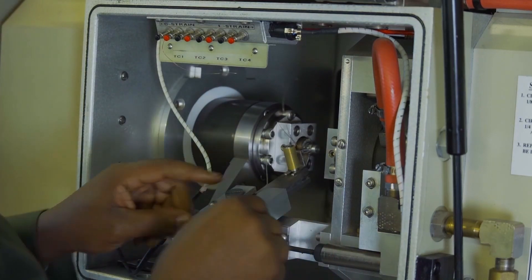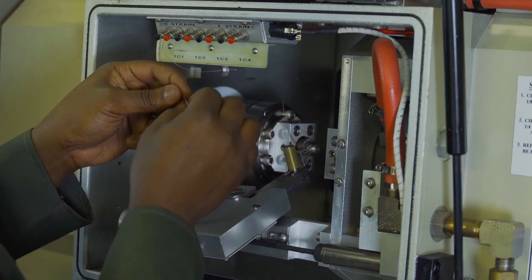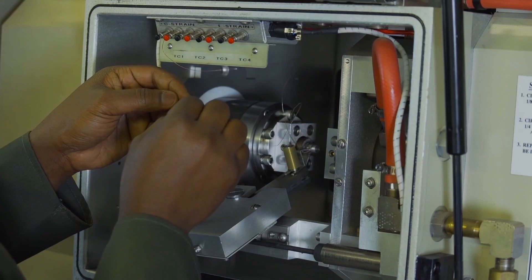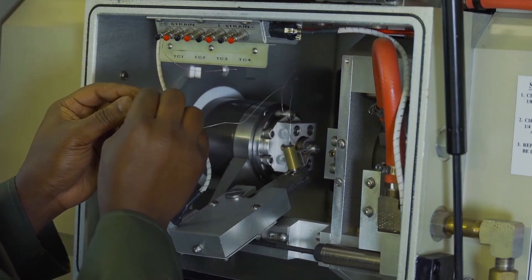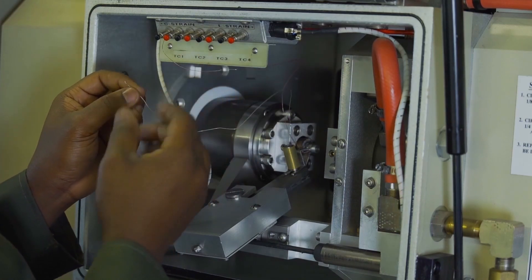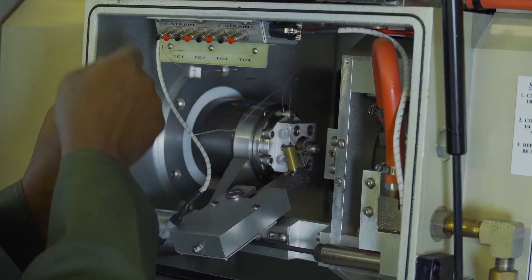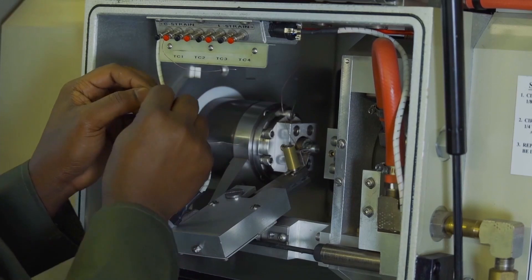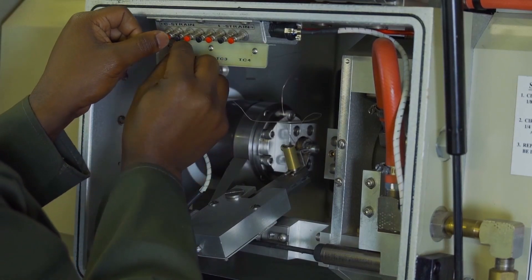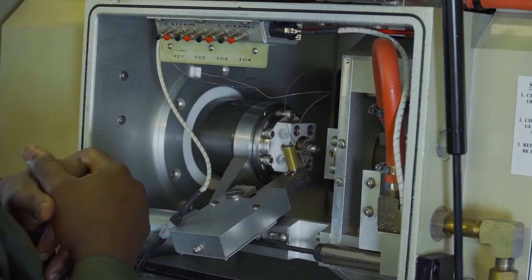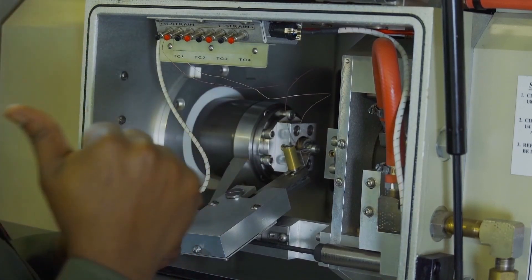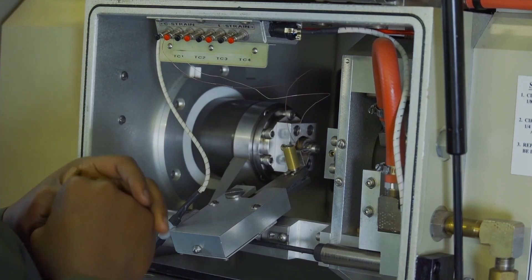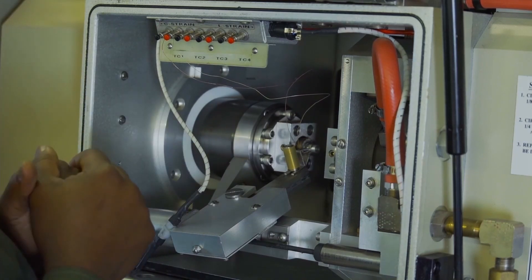And of course the yellow thermocouple to the red terminal. So one quick way to remember is the red thermocouple is not red on the terminal. Once you connect that, what you would see is that the temperature of the sample would be on the Gleeble console.